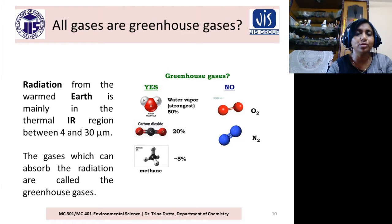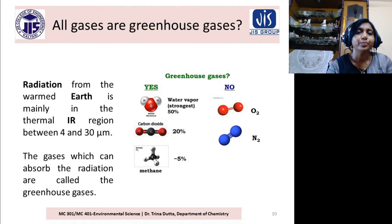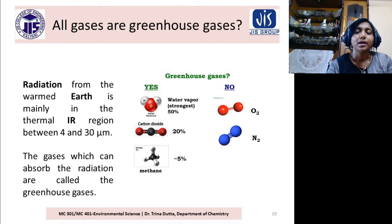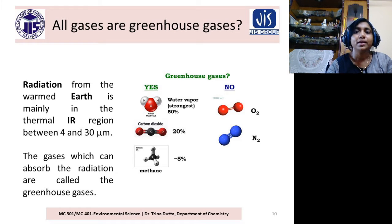For example, O2 is not a greenhouse gas. NO, NO2, SO2 — they are not greenhouse gases. N2 is not a greenhouse gas.